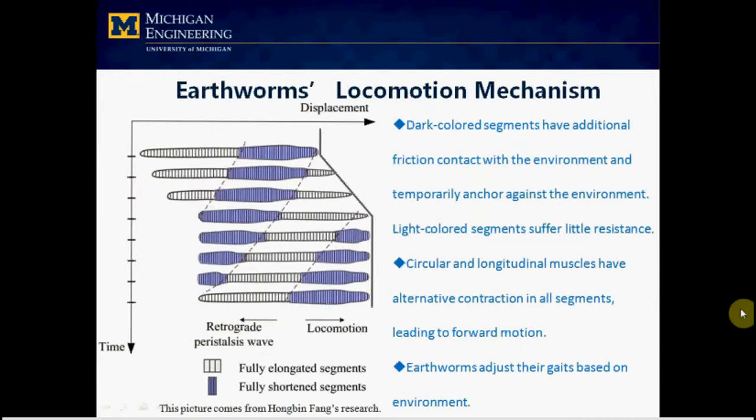In terms of locomotion mechanism, retrograde peristaltic wave is the characteristic feature of the Earthworm. In the schematic illustration of the locomotion mechanism, the dark color segments are in their shortest and fattest state, while light color segments are in their longest and thinnest state.